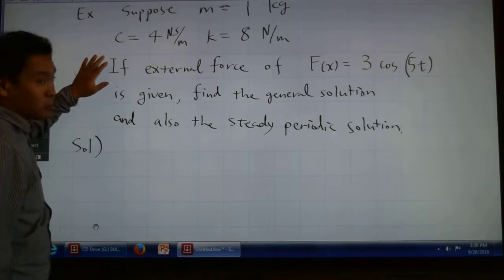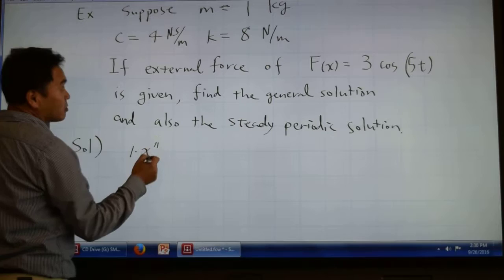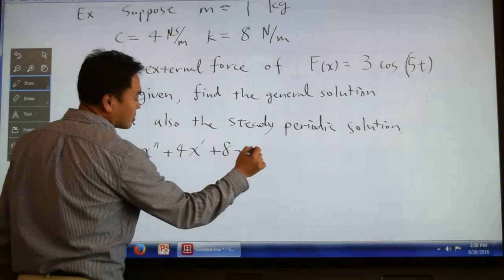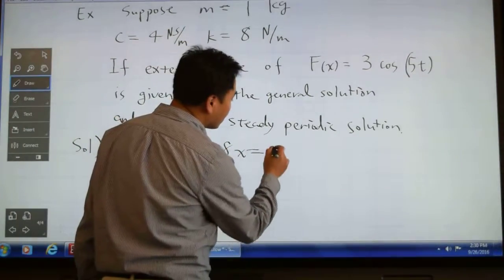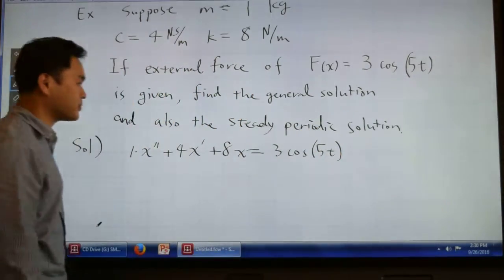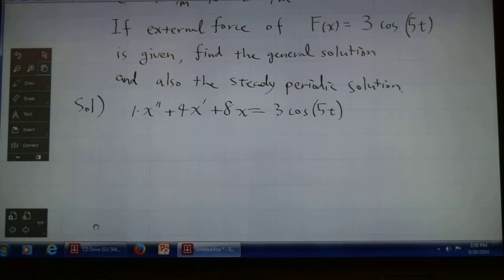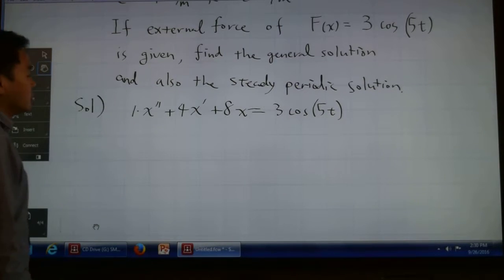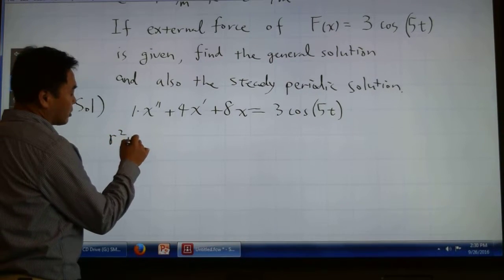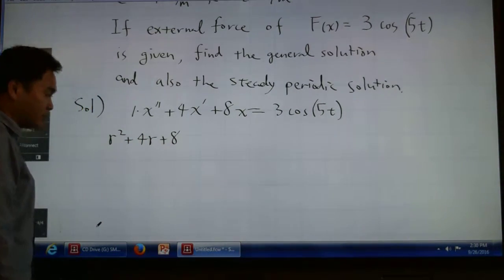Solution: You have to remember the master equation. It should be 1 times x'' + 4x' + 8x = 3 cos(5t). First, we need to come up with the characteristic equation: r² + 4r + 8 = 0.